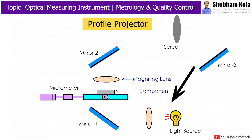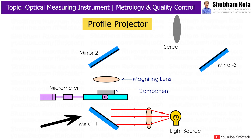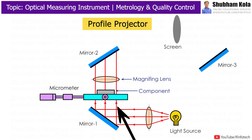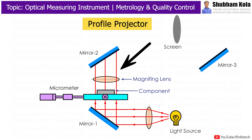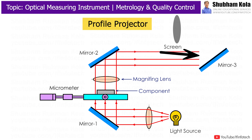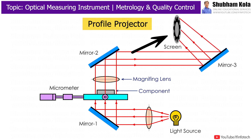During the working, when light rays are incident on mirror 1 through the condenser lens, they will be reflected in an upward direction and pass through the table made up of glass on which the component is mounted. The profile of the component is created at this point. This will be magnified by using the magnification lens. The magnified image would be reflected on mirror 2, then reflected to mirror 3, and finally visible on the screen.